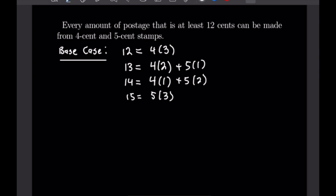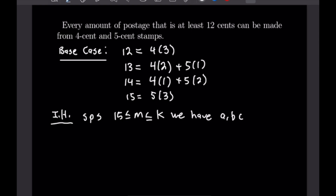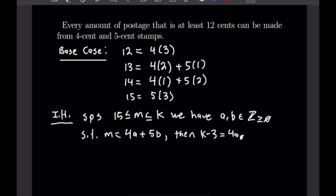Let's write out our induction hypothesis. We're going to suppose for M, where 15 ≤ M ≤ K, we have non-negative integers A and B such that M = 4A + 5B. That means we can write K−3 = 4A₀ + 5B₀, with A₀ and B₀ also being non-negative integers.